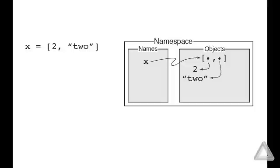And now let's go back and revisit namespaces but now in the context of lists. Shown on the left here is an assignment statement, where we have x is equal to the list with two elements, an integer 2 and a string, TWO.